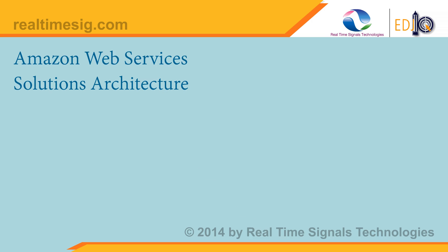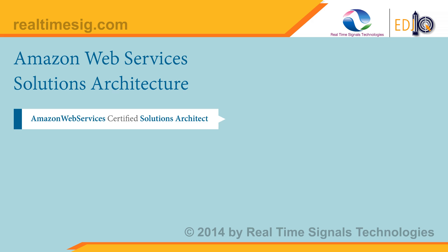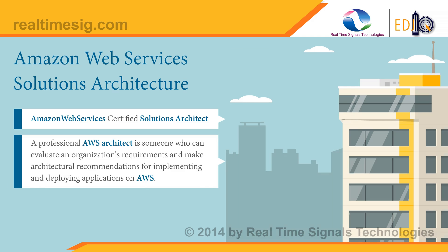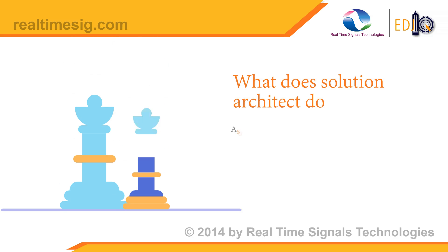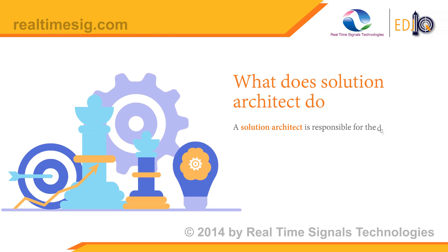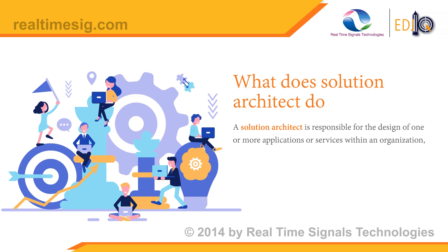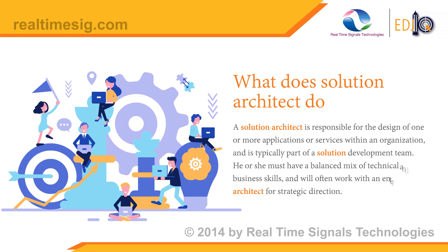Amazon Web Services offers a certified solutions architect path. A professional AWS architect is someone who can evaluate an organization's requirements and make architectural recommendations for implementing and deploying applications on AWS. A solution architect is responsible for the design of one or more applications or services within an organization and is typically part of a solution development team. He or she must have a balanced mix of technical and business skills and will often work with an enterprise architect for strategic direction.